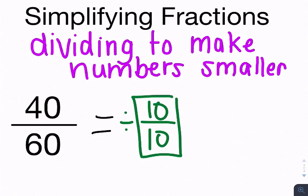And I know that it's equivalent because I'm going to divide by a giant 1. 10 over 10 is really the same as 1. So I'm not changing the value of this fraction. I'm just making my numbers smaller. So if I divide 40 by 10, I get 4. And if I divide 60 by 10, I get 6.